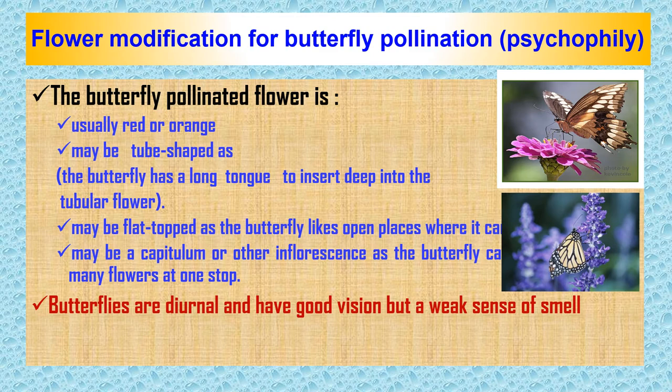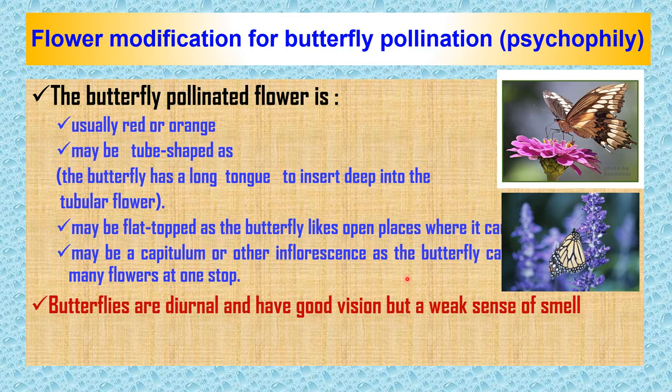In butterfly pollination (psychophily), there are several modifications. The butterfly-pollinated flower is usually red or orange. The flower may be tube-shaped, as the butterfly has a long tongue to insert deep into the tubular flower. The flower may be flat-topped, as butterflies like open places where they can sit and draw nectar. The flower may be in capitulum or other inflorescence types, as the butterfly usually visits many flowers in one stop. Butterflies are diurnal and have good vision but a weak sense of smell.